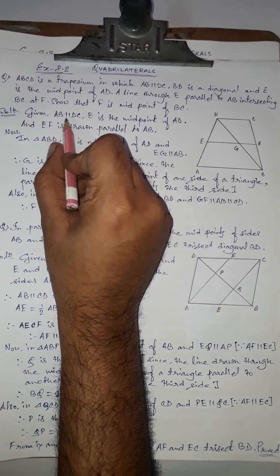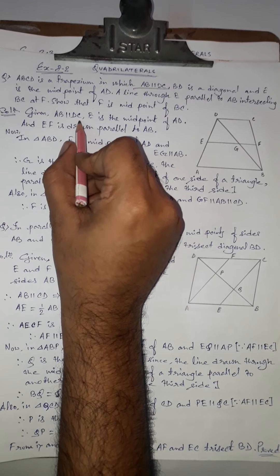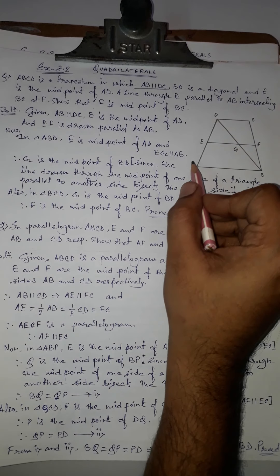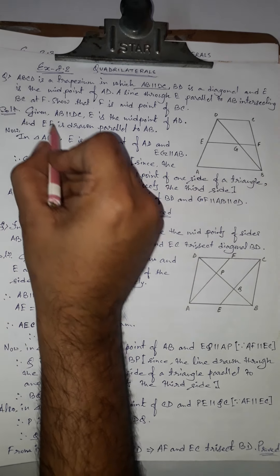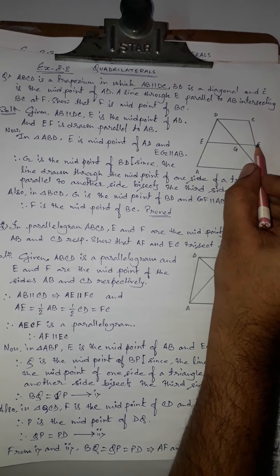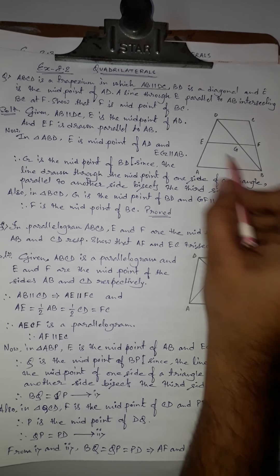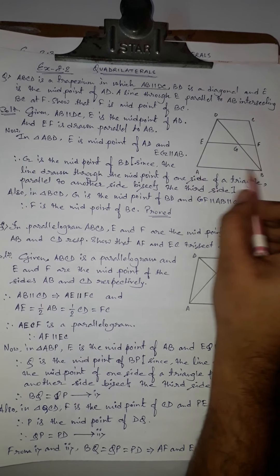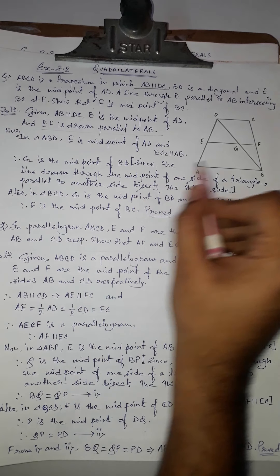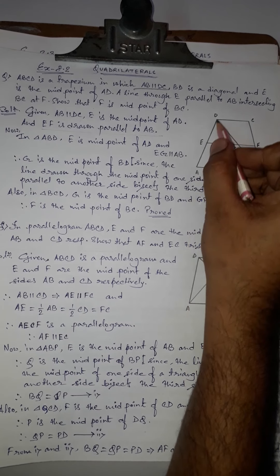In the given, we mention the parallel lines: AB is parallel to DC, E is the midpoint of AD, and EF is drawn such that EF is parallel to AB.